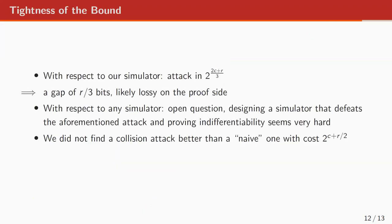Regarding tightness of the bound: with respect to our simulator, there is an attack in 2 to the (2C + R) over 3, based on a variant of one of our bad events targeting consistency. There is therefore a gap of R over 3 with the security bound, which we think is lossy on the proof side. Moreover, this attack does not carry over to any simulator — it's not guaranteed that it's impossible to counter this attack by designing an ad hoc simulator. But such a simulator looks very complicated and it's not clear it has no other weaknesses. The tightness of the bound with respect to any simulator is an open question. We also looked at collision resistance and didn't find an attack better than the naive one treating the top and bottom permutation and mixing layer as a black box.